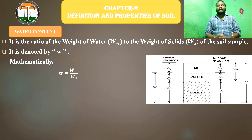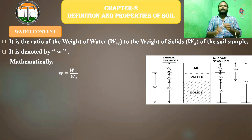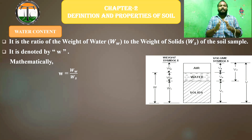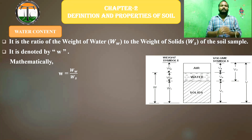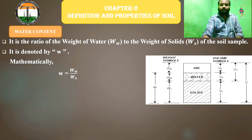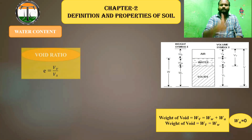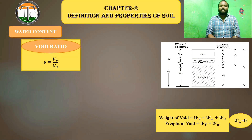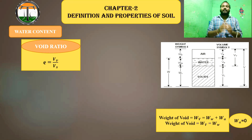We have many properties like air content, porosity, void ratio, percentage air void, degree of saturation. Water content is just related with the void ratio. If we do a comparison, the concept will be easy to understand. But how does it differ from the void ratio? Void ratio means the ratio between the volume of voids to the volume of solid.